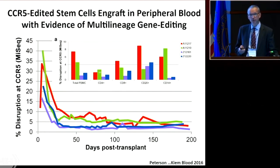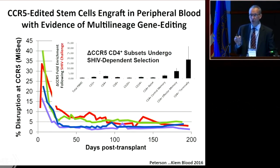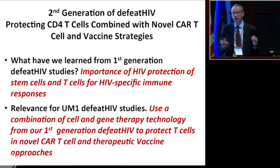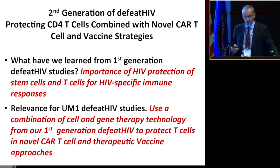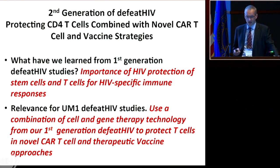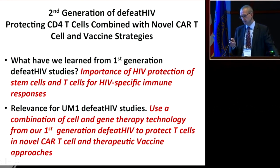Another critical finding was that when we infected these animals, we saw selection of protected cells in the lymphoid compartment, even at low levels. Based on this, we moved to our second-generation DEFEAT HIV, applying knowledge about the importance of HIV protection of stem cells and T cells for developing HIV-specific immune responses — to now devise novel CAR T cell studies and therapeutic vaccine approaches with protected T cells.